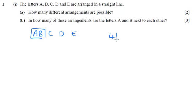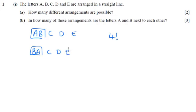So that means they can rearrange four factorial ways. But those four factorial ways are when we've got A before B. There's another four factorial ways of arranging the letters when B goes before A. So we've got two lots of four factorial, which is 48.